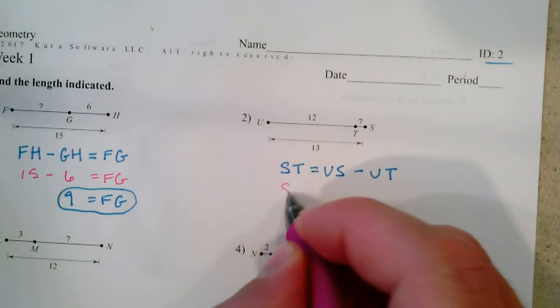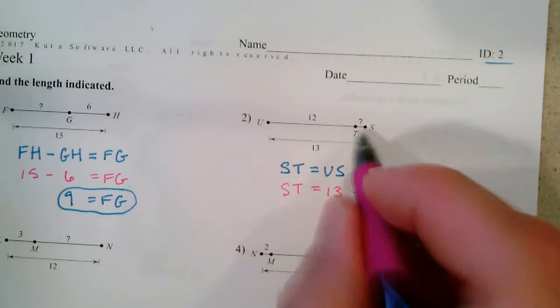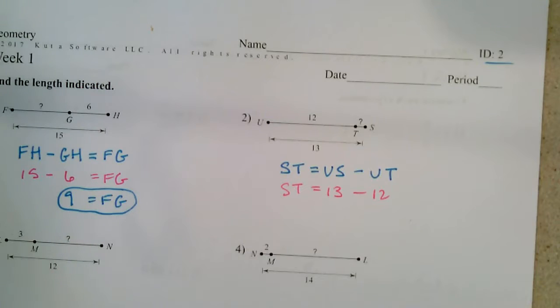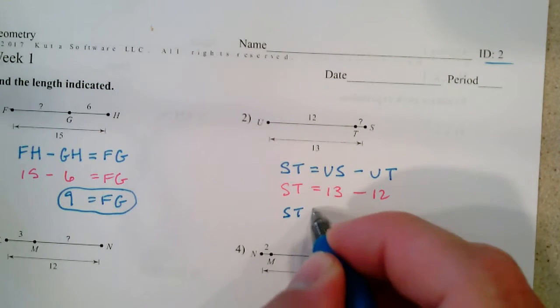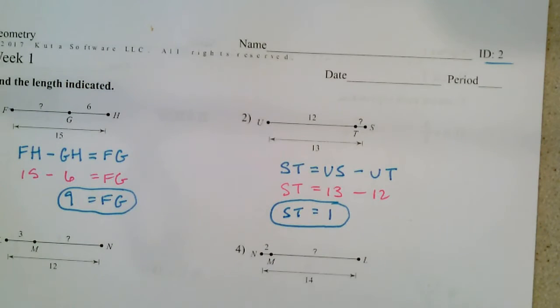So ST, US is 13, UT is 12. So ST is 13 minus 12, which is 1. Alright, next up.